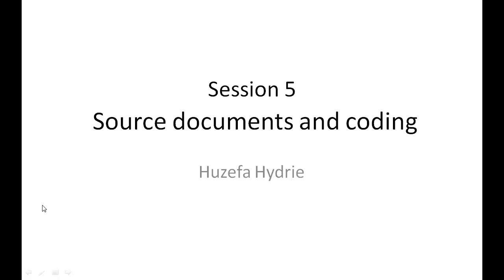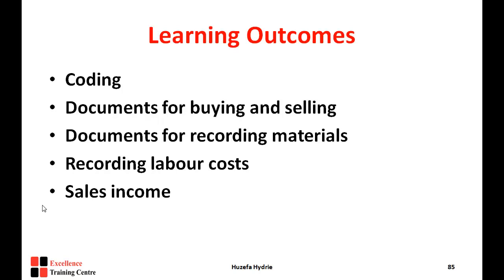The next chapter we have to discuss today is chapter number five in your book — source documents and coding. Looking at the learning outcomes, we will discuss what coding is, the different types of codes, the documents required to buy and sell products, the documents required to record material cost, labor cost, and the requirement of sales income.